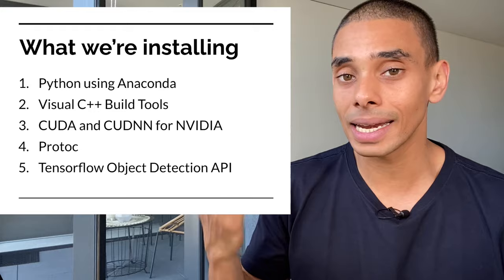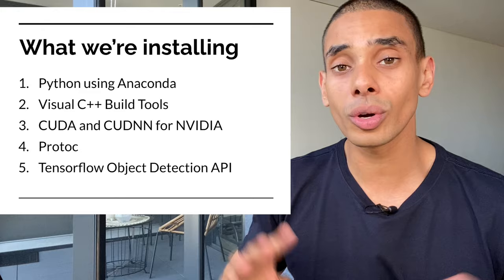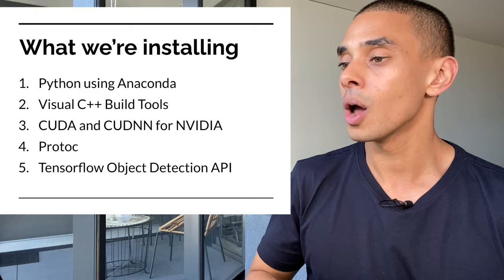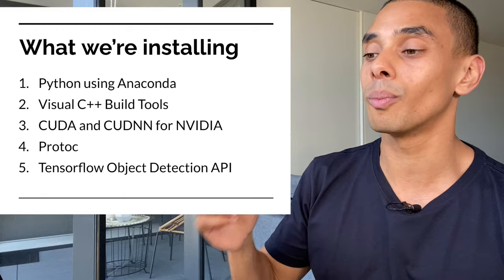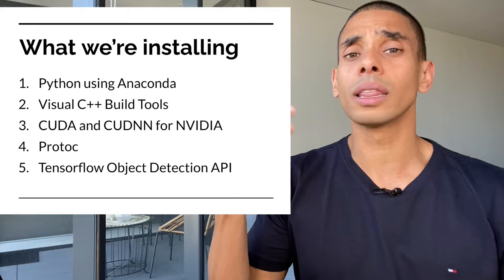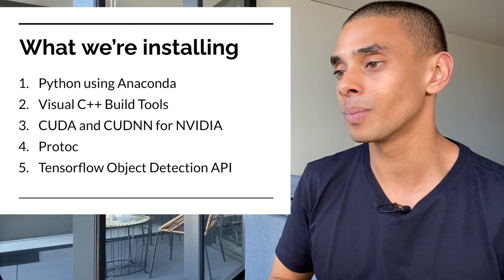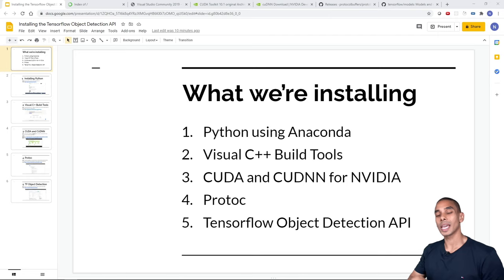There are five key things you need to install in order to work with the TensorFlow Object Detection API. First, you need Python. Second, you need the Visual C++ Build Tools, which TensorFlow relies on when being compiled. Third, if you're using an NVIDIA GPU, you need CUDA and cuDNN to accelerate deep learning. Fourth, you need Protocol Buffers (protoc), the format TensorFlow uses to save models. Finally, you need the TensorFlow Object Detection API itself, available through GitHub.